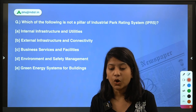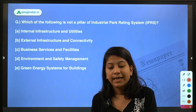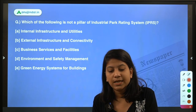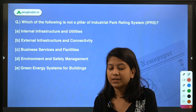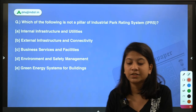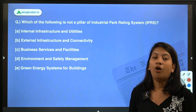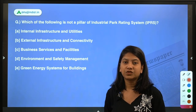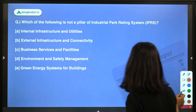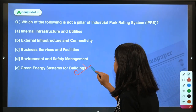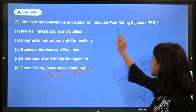Which of the following is not a pillar of the Industrial Park Rating System? Internal infrastructure and utilities; external infrastructure and connectivity; business services and facilities; environment and safety management; or green energy systems for buildings? The right answer is option E — green energy systems for buildings is not a parameter of the Industrial Park Rating System.